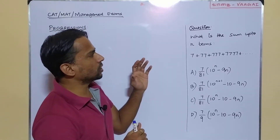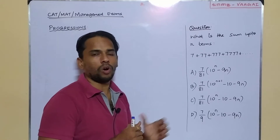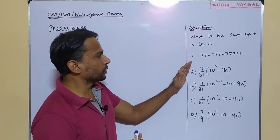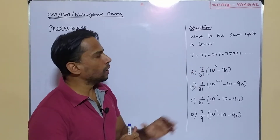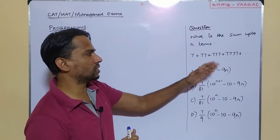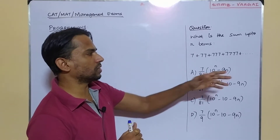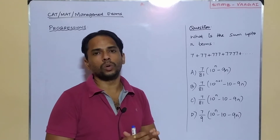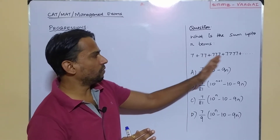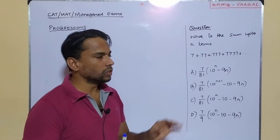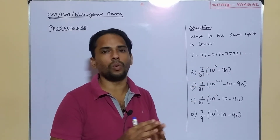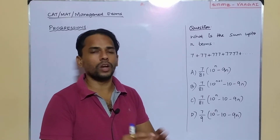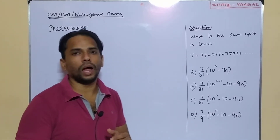Our question here is: what is the sum up to n terms of this given series? The series is 7 plus 77 plus 777 plus 7777 and so on, up to n terms — we are asked to find what is the sum. It is a nice sum constructed with the digit 7 only. Let us think about what approach we can use to solve this problem.